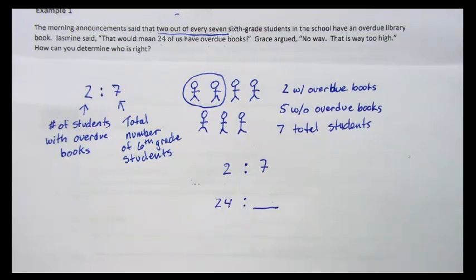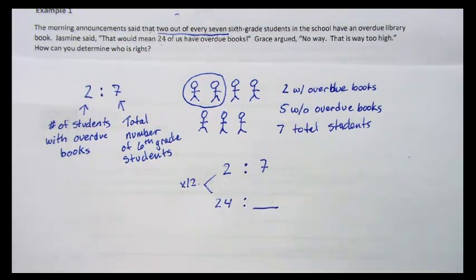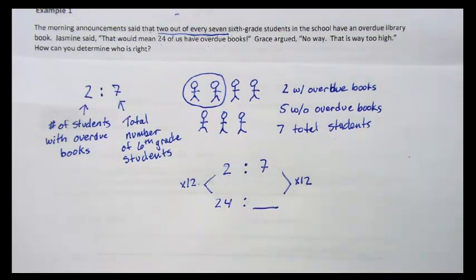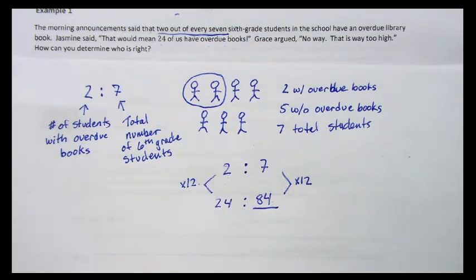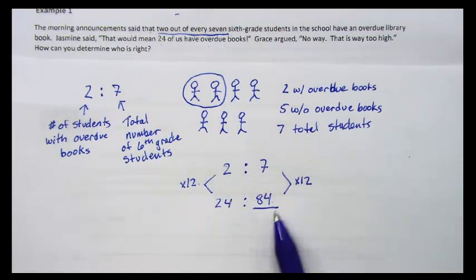What number do we need to multiply two by to get 24? That's right, we need to multiply it by 12. If these two ratios are equivalent, then we need to multiply the seven by 12 as well. Seven times 12 is 84. Now we can see who is right. If there are 84 students in the sixth grade, then Jasmine is right. But if there are not 84 students in the sixth grade, then Grace would be right. Either way, we've used equivalent ratios to find out our missing piece of information.